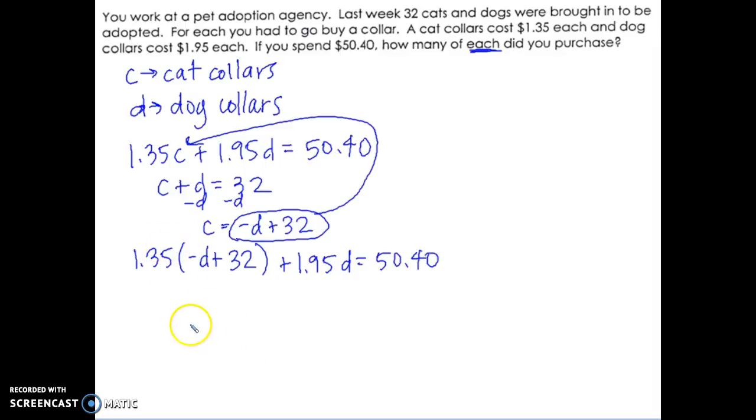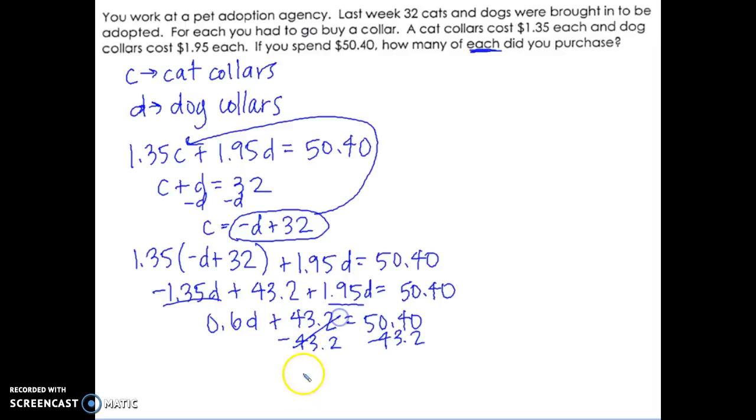If I distribute 1.35, I end up with negative 1.35D plus 43.2 plus 1.95D equals 50.40. Combining like terms, negative 1.35D plus 1.95D gives 0.6D. I subtract 43.2 from both sides to get 0.6D equals 7.2, then divide by 0.6. So there were 12 dog collars.